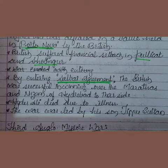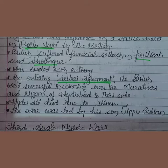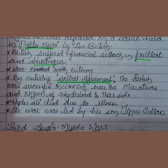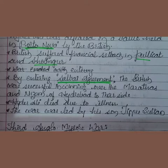Tipu Sultan knew that hurting the business interests of the British would weaken their political strength. He tried to organize the enemies of the British into one group. He tried to break the British monopoly over trade with India. His main strategy was that if the British had to become politically weak, one had to concentrate on trade. If he could make them financially burdened, their strength would go down — that was his ambition.